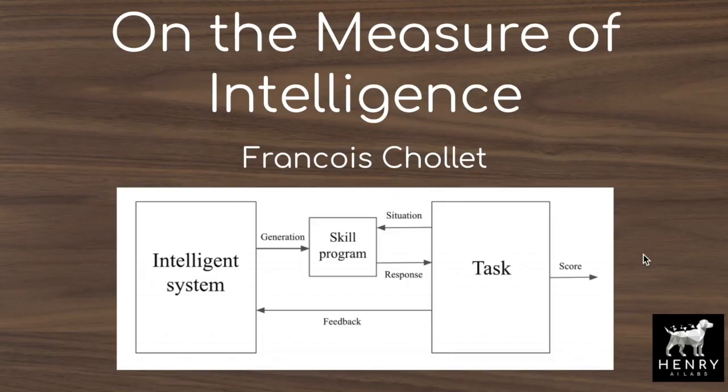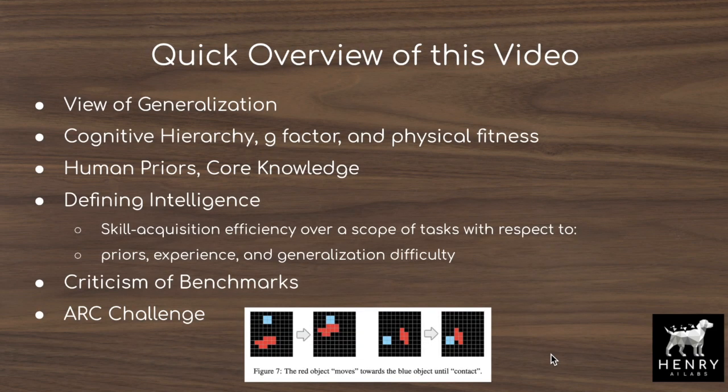This is a quick overview of one of the most interesting papers in deep learning and AI, 'On the Measure of Intelligence' by François Chollet. We'll start with Chollet's view of generalization, the difference between system-aware and developer-aware generalization, and viewing the developer of the machine learning algorithm as part of the system being evaluated with respect to generalization.